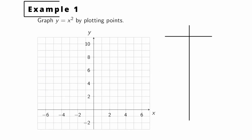In our first example, we want to graph y equals x squared by plotting points. Using vertex form, the vertex should be (0, 0) and a equals 1, so it opens upward. Let's make a table of x and y values. If x is 0, y is 0. If x is 1, y is 1. If x is 2, y is 4. And if x is 3, y is 9.